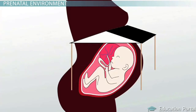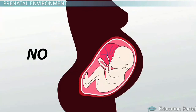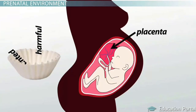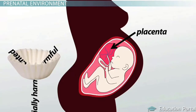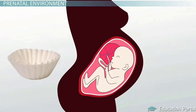This sounds like a pretty sheltered environment for an unborn child. Let's consider our question again: is the developing child protected from all unwanted environmental hazards? Unfortunately, the answer is no. Up until the 1960s, it was believed that the placenta also acted as a filter to keep anything unwanted or harmful from affecting the baby. We now know that potentially harmful substances can cross the placenta and be transferred to the developing child from the mother.